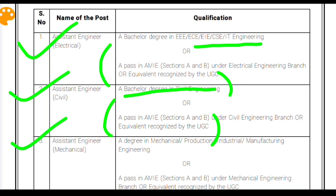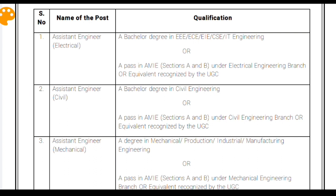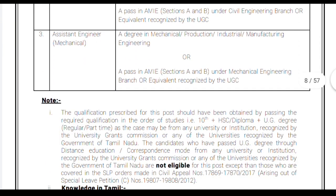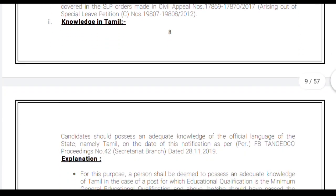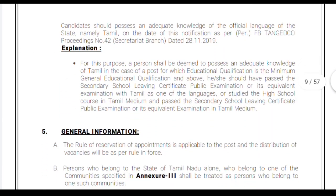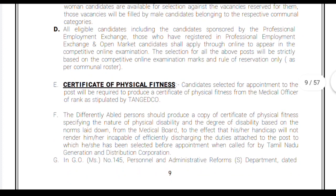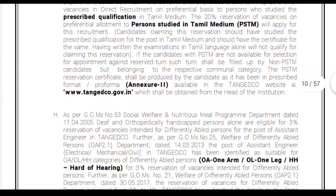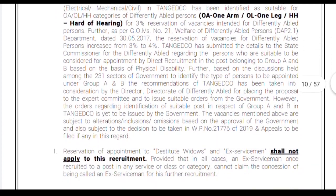If you belong to the Mechanical Engineering category, you have to obtain a Mechanical Engineering degree or pass Section A and B from the Institution of Engineers India. This is definitely good news for Institution of Engineers India degree holders, because their degree is given the same or equal priority as other regular degrees.